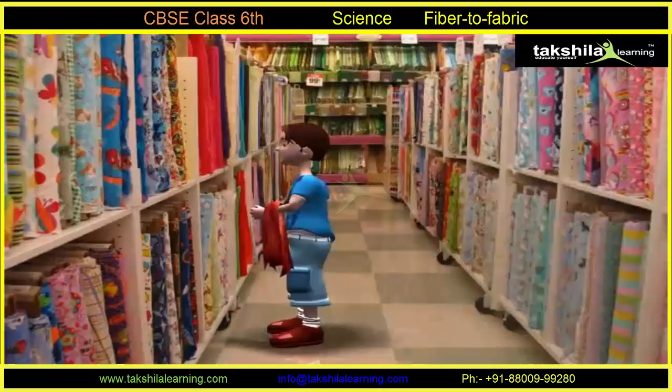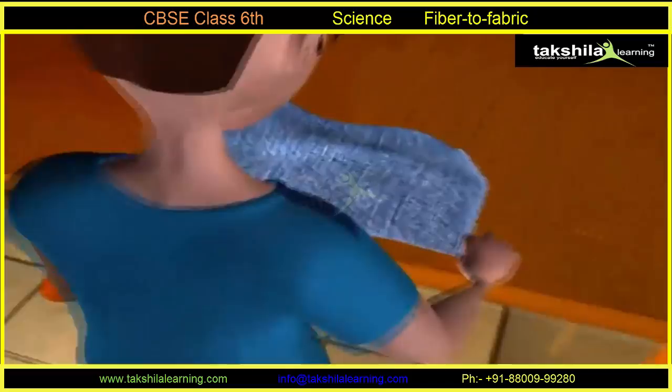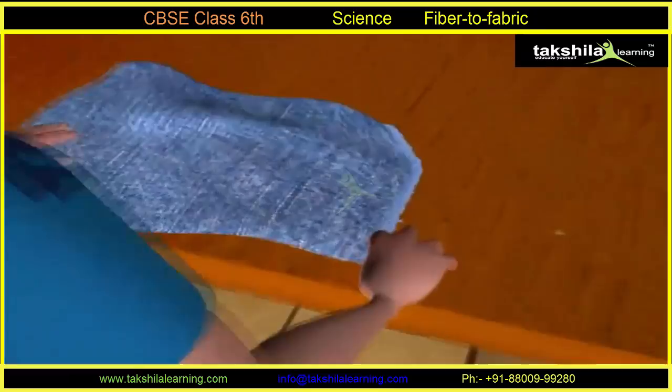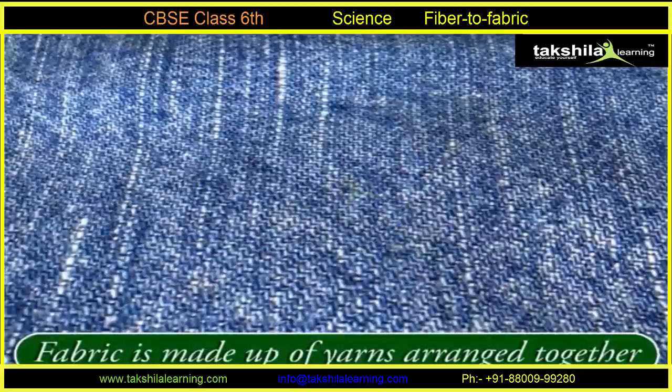Do you wonder what these different fabrics are made up of? When you look at any fabric, it appears to be a continuous piece. Look at it closely, then try to find the end of a loose thread or yarn at any of its edges and pull it out. You see that a fabric is made up of yarns arranged together.